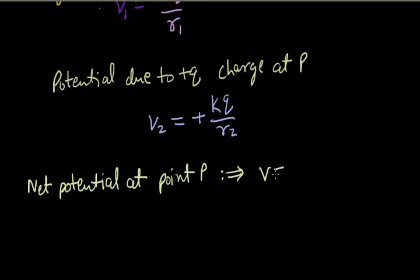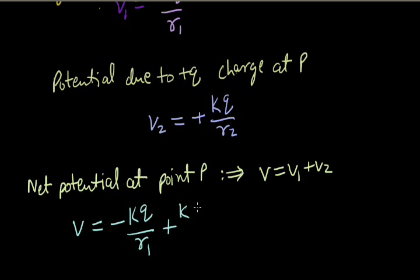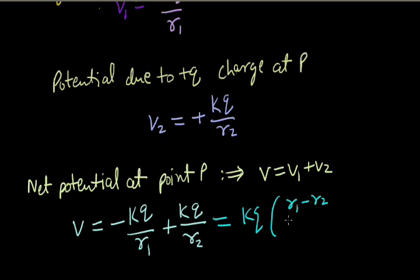The net potential at P: V equals V1 plus V2, which gives V equal to minus kQ upon R1 plus kQ upon R2, so we get kQ into (R1 minus R2) upon R1 R2. Let's call this equation 1.